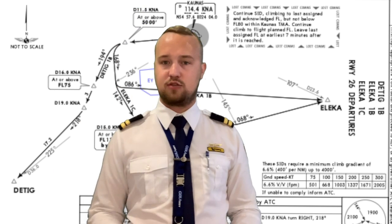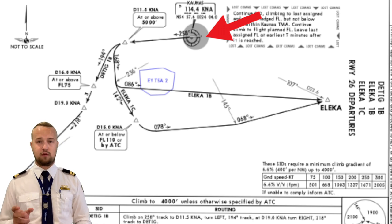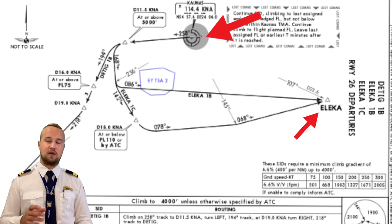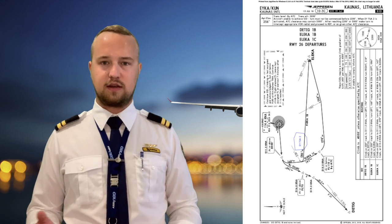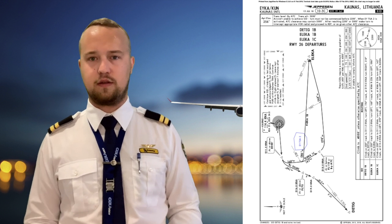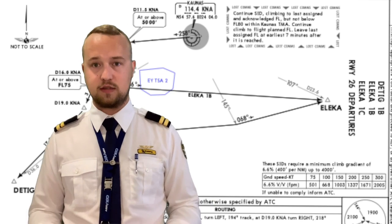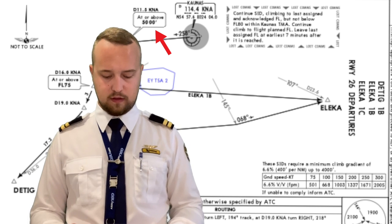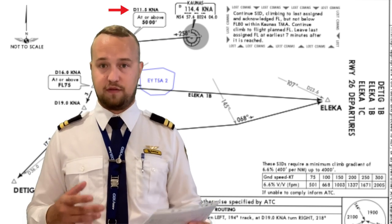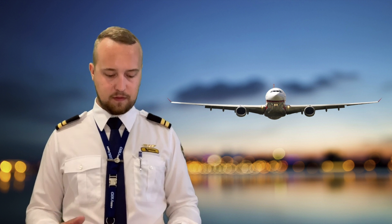The clearance delivery will tell us a Standard Instrumental Departure — the so-called SID. The SID leads us from the airport, from the runway, to a specific point, and this point connects the SID to the airways. For example, we are in Innsbruck International and we were cleared for the SID ALEKA One Charlie. The runway in use is runway 26, so after takeoff we have to climb to 5,000 feet and to a distance of 11.5 nautical miles from the Kilo November Alpha VOR.